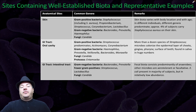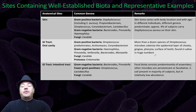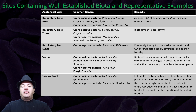Sites containing well-established biota and representative examples: In the skin, we find gram-positive, gram-negative, and fungi. For example, approximately four percent of individuals carry Staphylococcus aureus on their skin. In the oral cavity, we find gram-positive, gram-negative, fungi, and protozoa — with huge numbers found in human saliva. In the intestinal tract, we find gram-negative, a few gram-positive, and fungi; fecal biota consists predominantly of anaerobes. In the nose, we find gram-positive and gram-negative bacteria; approximately 30 percent of individuals contain staph aureus.